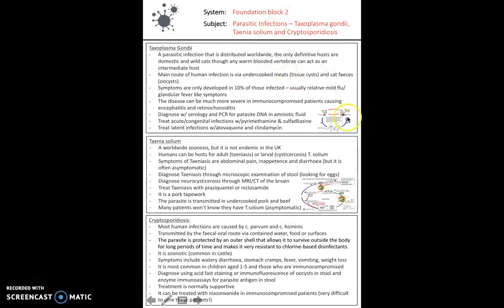Looking at parasitic infections, Toxoplasma gondii is a parasitic infection where the main routes of human infection are through undercooked meats — where we get tissue cysts — and cat faeces, where we get oocysts. Symptoms are only developed in 10% of those infected. The disease can be much more severe in immunocompromised patients. It can be diagnosed with serology and PCR for parasite DNA in amniotic fluid.